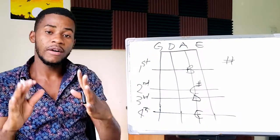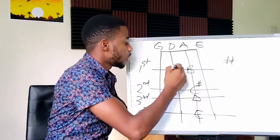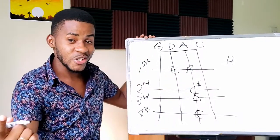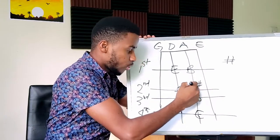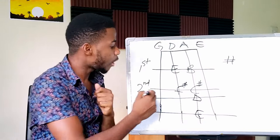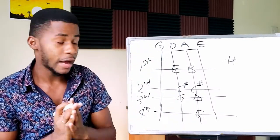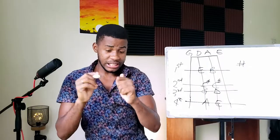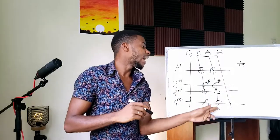Third finger is D and then the little finger is E — these are the notes you have on the A string. For the D string, first finger is E, second finger is F sharp, third finger is G, and finally the little finger is A. So these are the notes you have on the A and the D string.